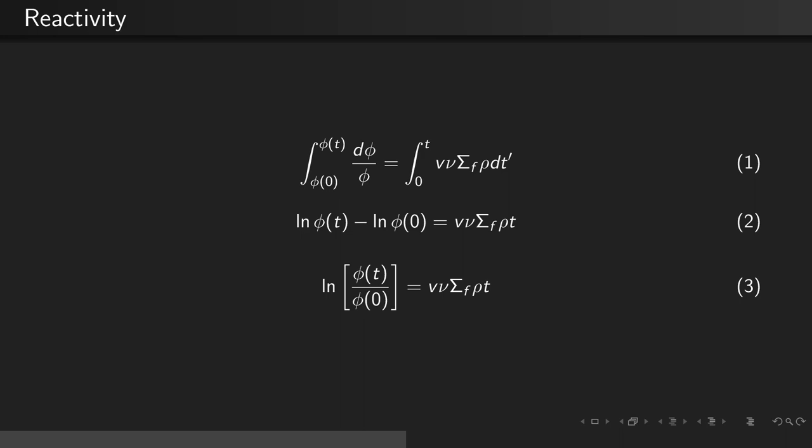Using log rules, we see that the natural log on the left-hand side becomes the natural log of phi of t divided by phi of 0.